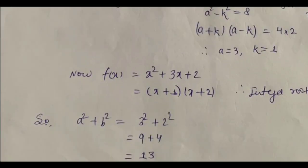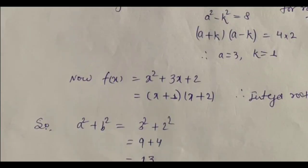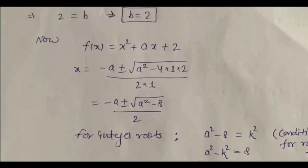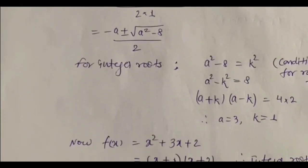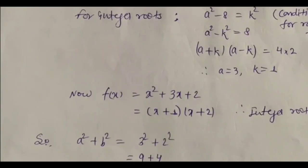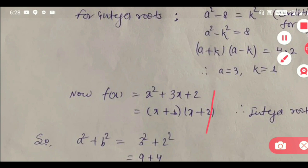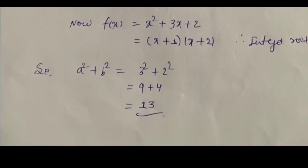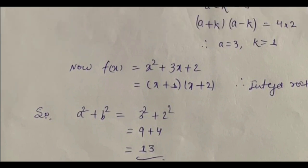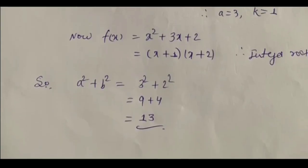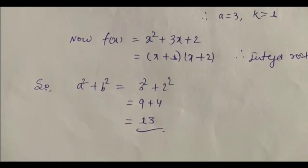Main equation को वापस लिखते हैं — यहां directly: b = 2 and a = 3. हमें find करना है a² + b², so it is 9 + 4 = 13. So 13 is my final answer for the second question.